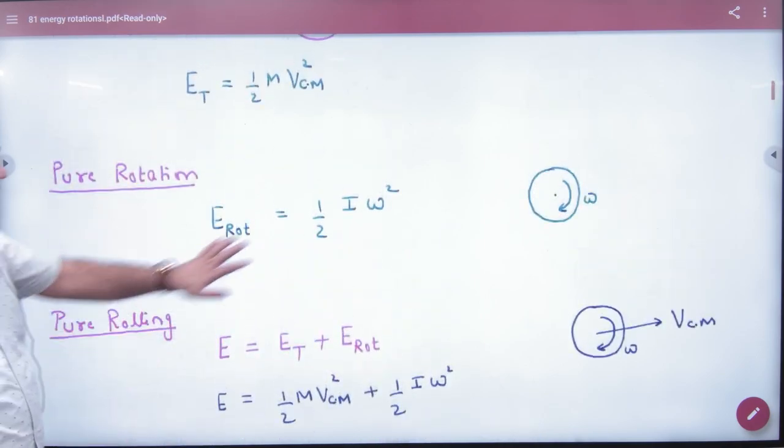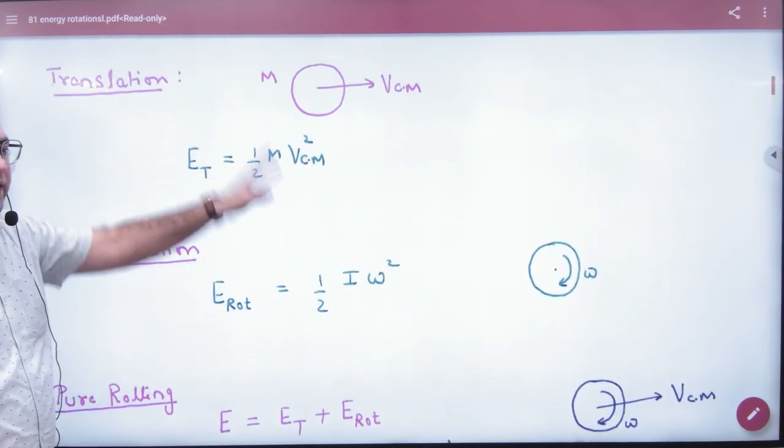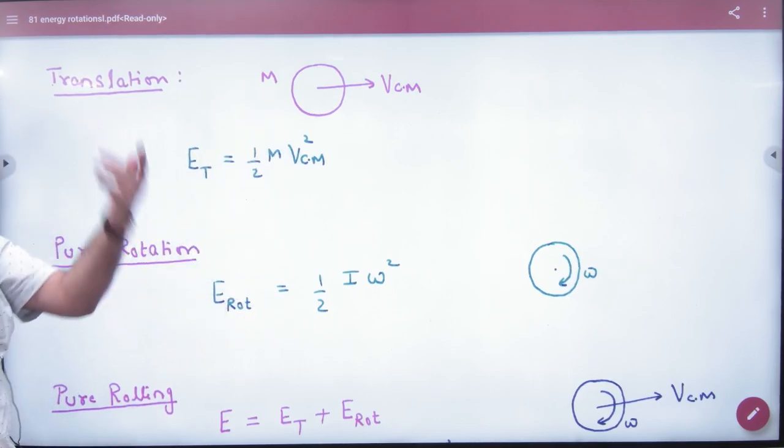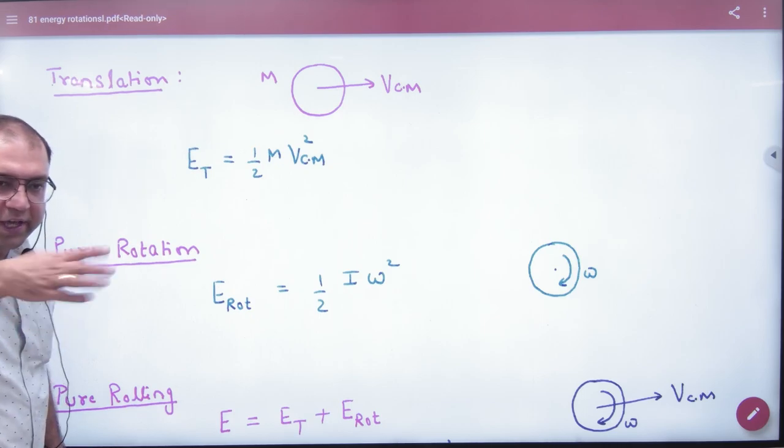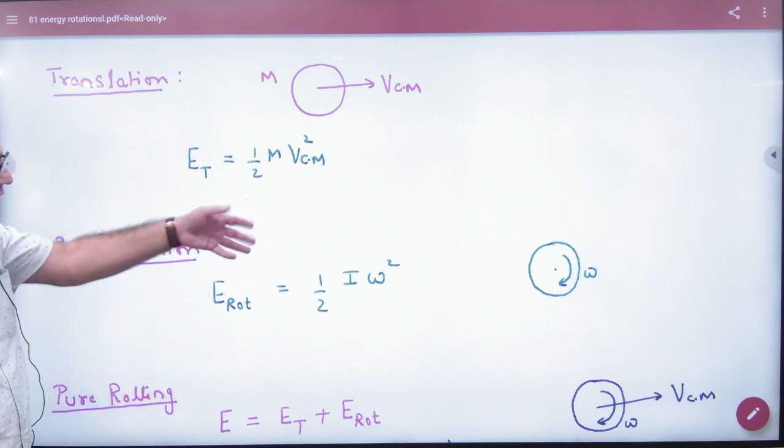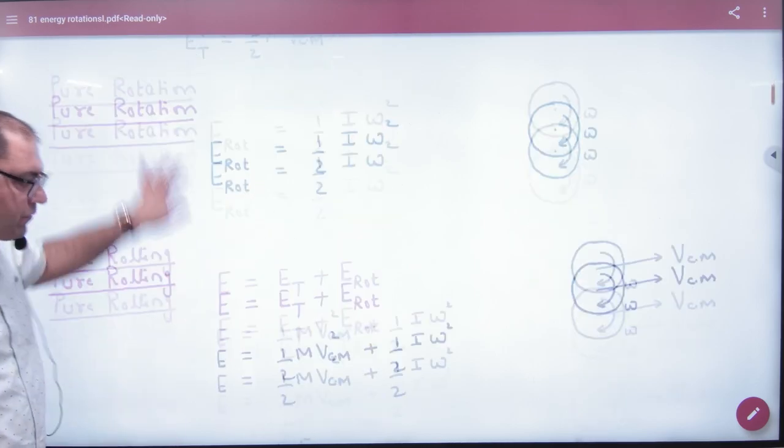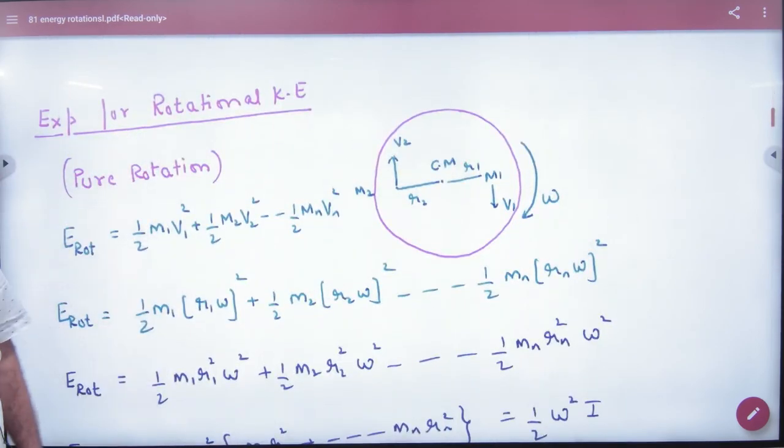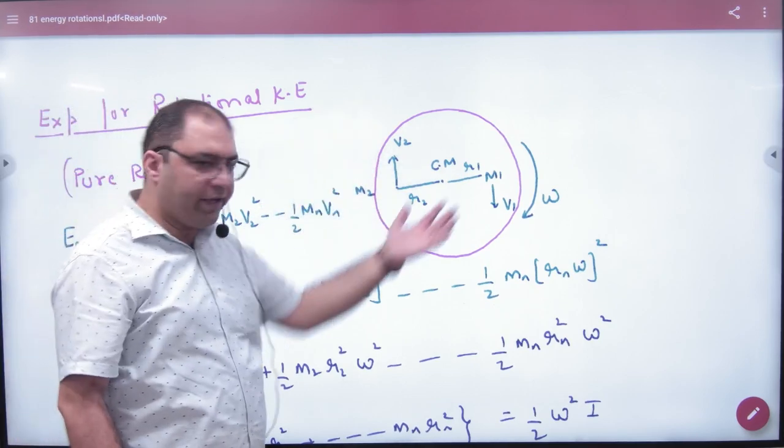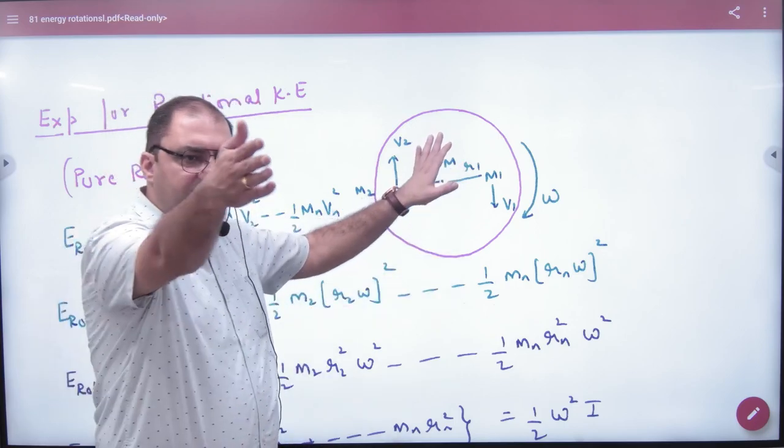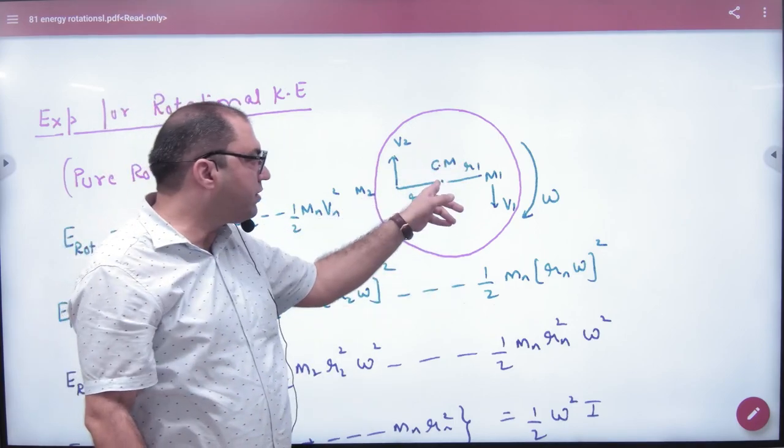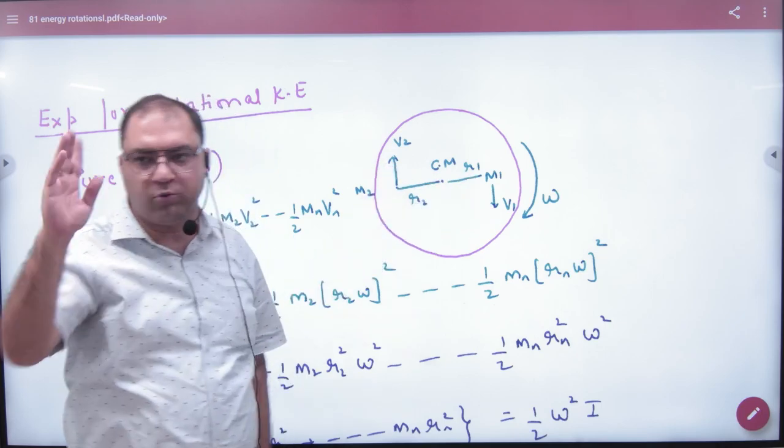But this is not a formal way to tell how m relates to I. Now we have to formally derive this. So, the expression for the rotational kinetic energy: the body is rotating about an axis with masses m1, m2, m3 up to mn and perpendicular distances from axis r1, r2, r3 up to rn.